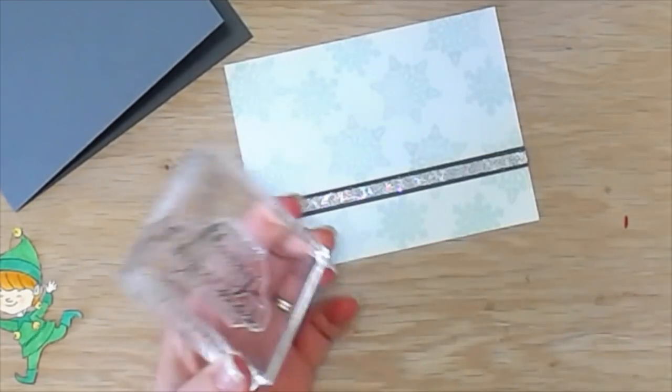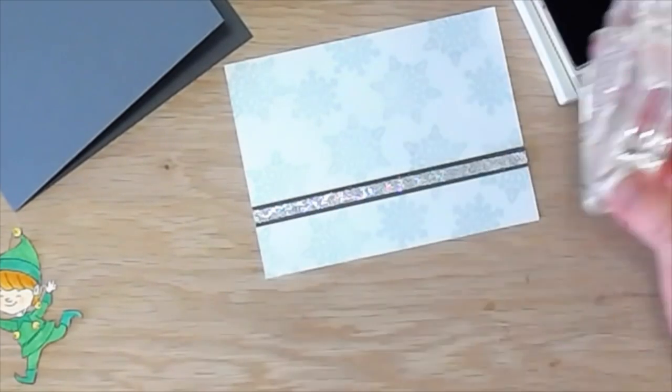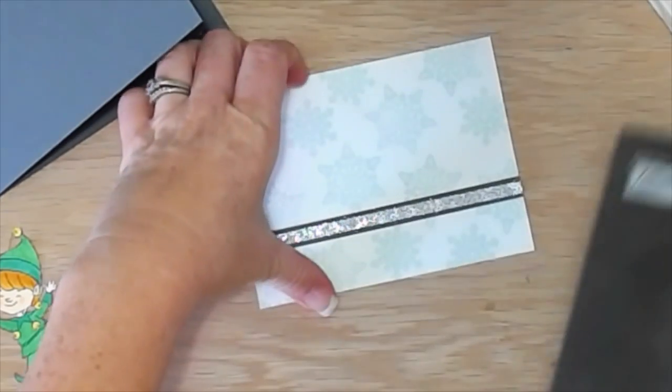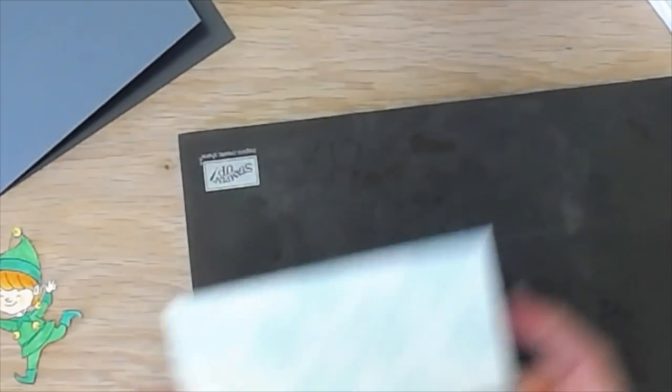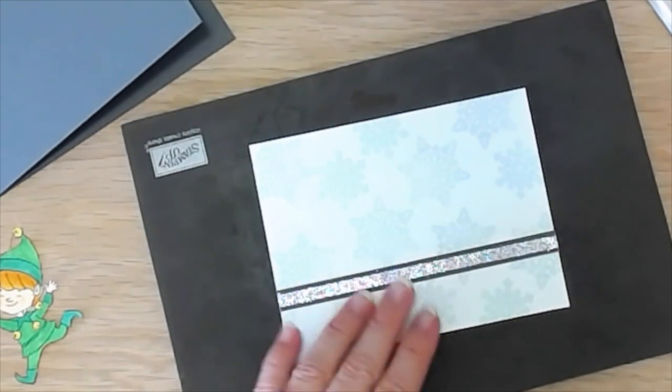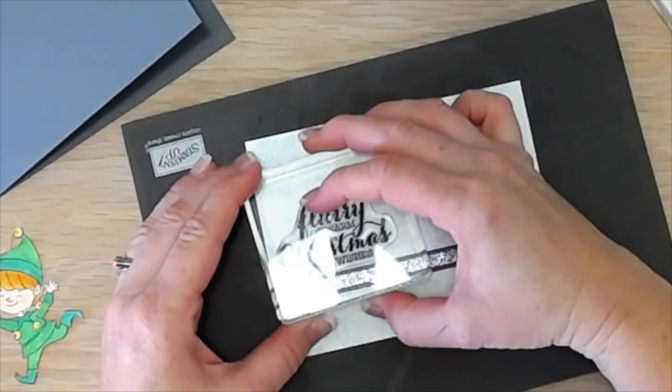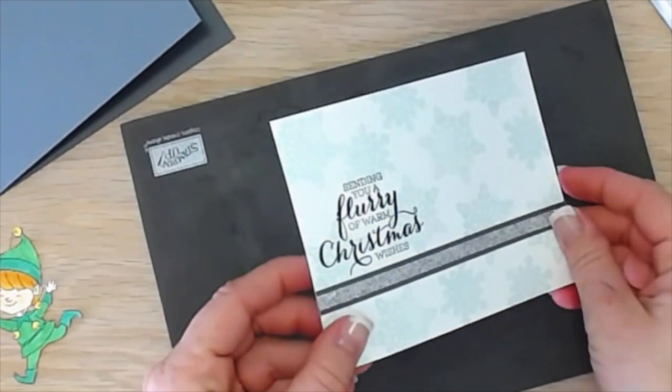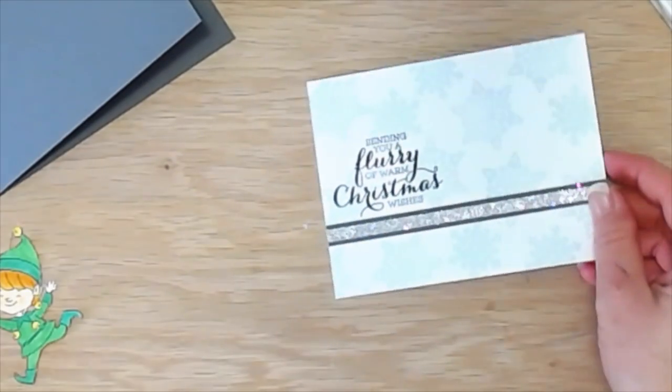And I'm going to bring in this super cute sentiment from the Flurry of Wishes. It says sending you a flurry of warm wishes, Christmas wishes. And I think that's so sweet because it kind of will look like this sweet little elf is saying that. And I stamped that in basic gray, Stampin' Up's basic gray.